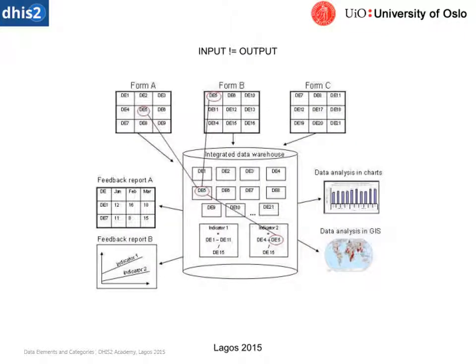Let's look at what these data elements do in the system and how they interact with indicators. At the top here we have Form A, Form B, Form C, with a number of data elements in each form. We're going to look at data element 5, which appears in Form A and Form B.